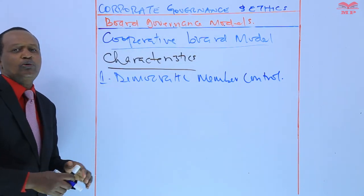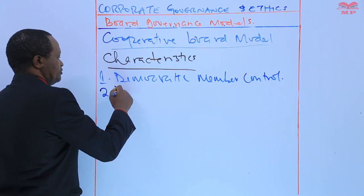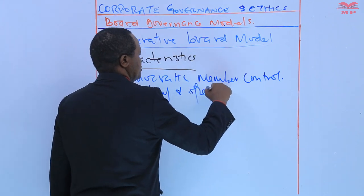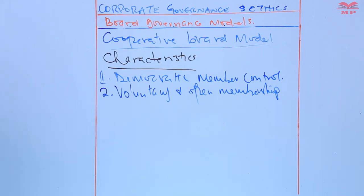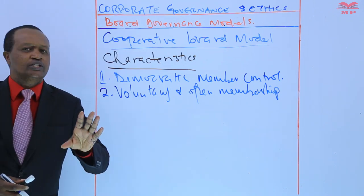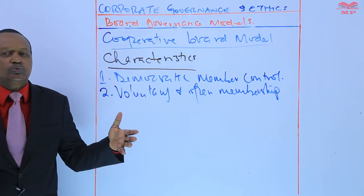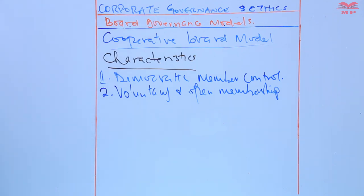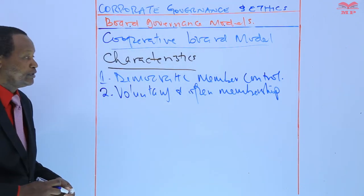Characteristic number two is voluntary and open membership. The membership is voluntary and open, meaning that cooperatives are open to all individuals who share their common goals and are willing to accept the responsibilities of membership without any discrimination based on social, political, or economic factors.